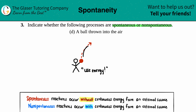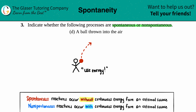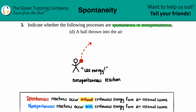So this would not happen under natural conditions — a ball does not just go upward without somebody throwing it. A ball would never just launch into the sky without that external source of energy. Because that's the case, this is a non-spontaneous reaction. We needed that continuous input from the person to launch that ball into the air.